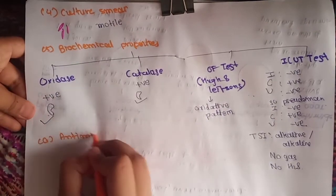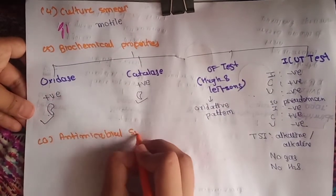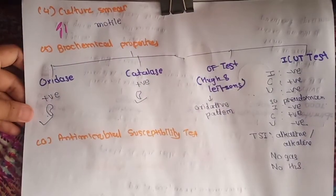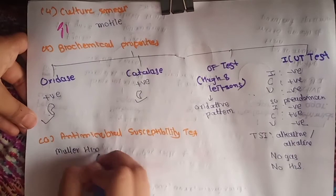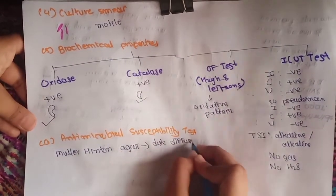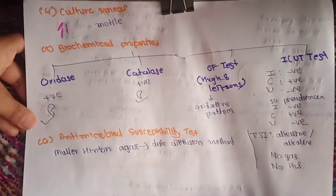The sixth method is antimicrobial susceptibility test. For better antibiotic treatment, we check the resistance of bacteria on Mueller-Hinton agar by the disc diffusion method.